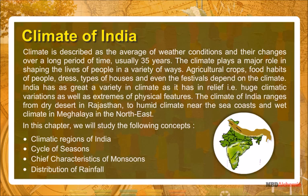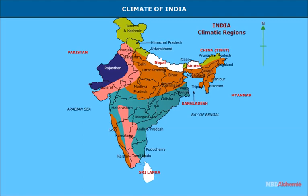And wet climate in Meghalaya in the northeast. In this chapter we will study the following concepts: climatic regions of India, cycle of seasons, chief characteristics of monsoon, distribution of rainfall, and climate of India.